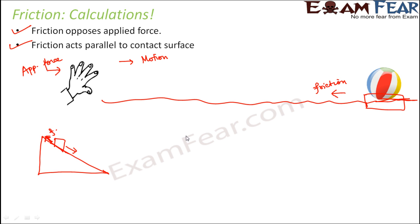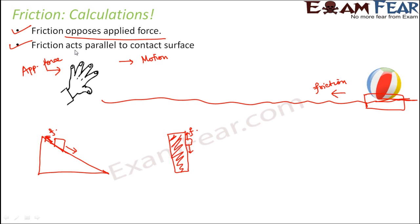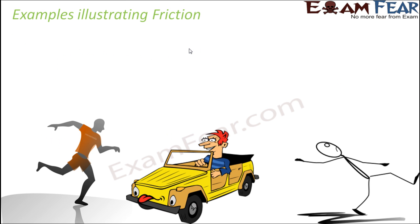Similarly, if you consider a vertical surface — say a wall — and an object is sliding down it, since the object is moving in this direction, the force of friction will act in the upward direction, parallel to the contact surface. So these are the two points to remember: friction is always opposite to applied force, and always parallel to the contact surface.